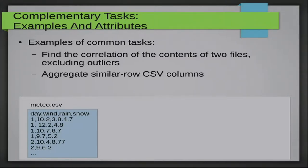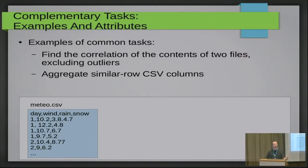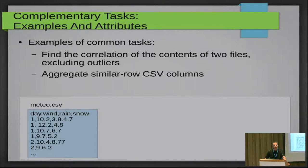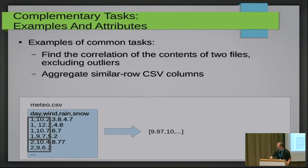The second example is aggregating similar rows in a CSV file. The file has rows where each row indicates the day a measurement was made, with measurements for wind, rain, and snow. On some days more than one measurement was made — for example, on day one wind was measured as 10 and also 12. We'd like to aggregate consecutive similar rows so that day one has an average wind measurement of 9.97, giving us a much smaller array to process.